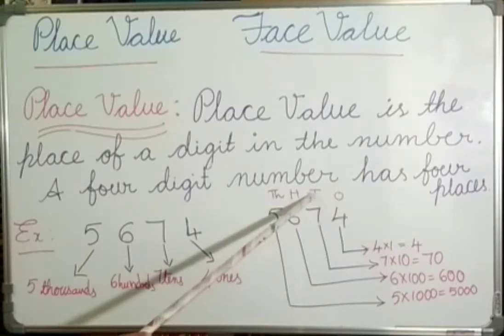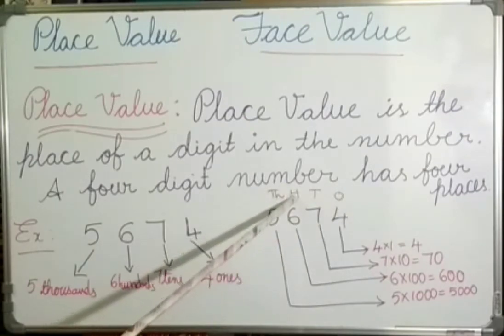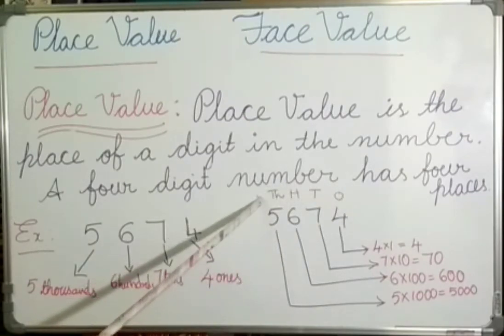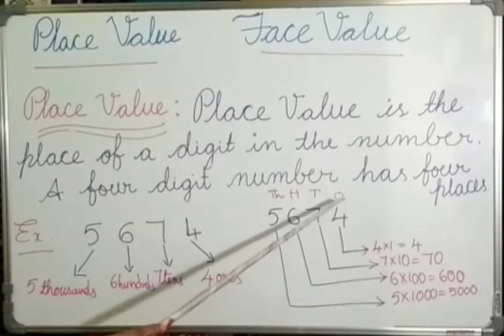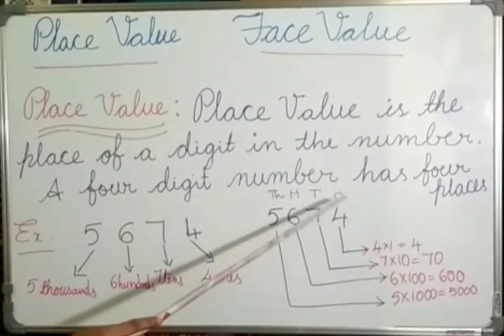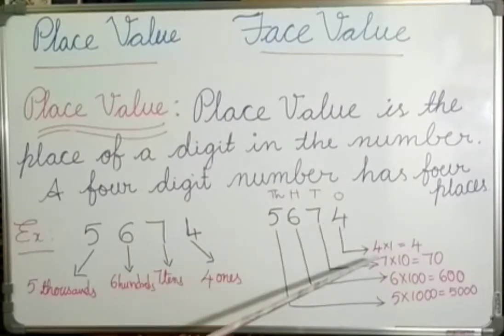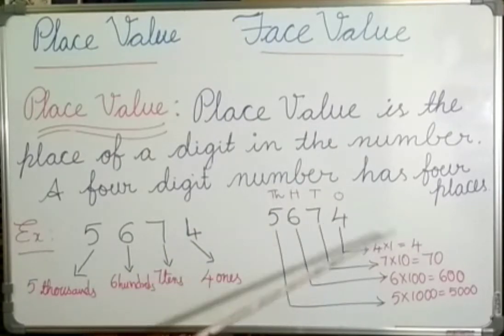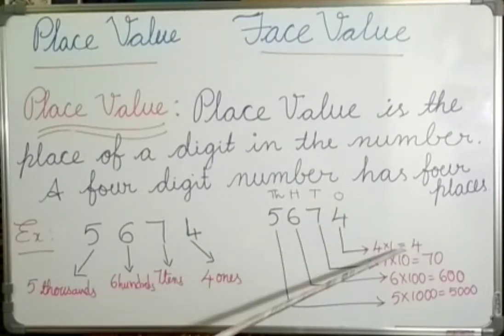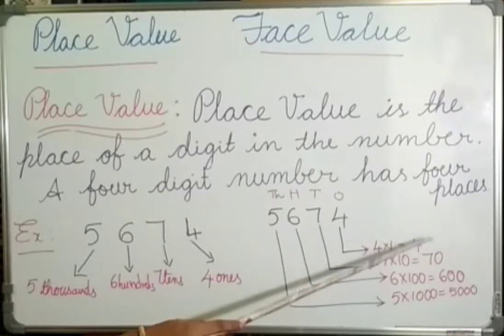The places are 1's, 10's, 100's, and 1000's. 4 is at the 1's place, so the place value of 4 is 4 × 1, which is equal to 4.